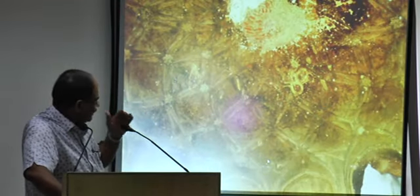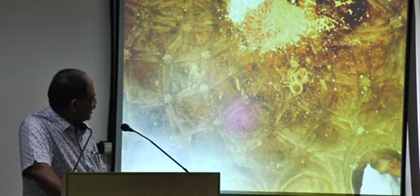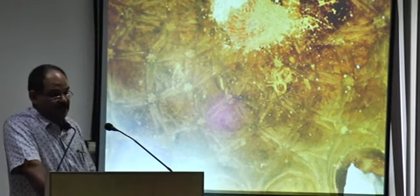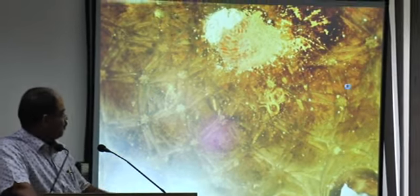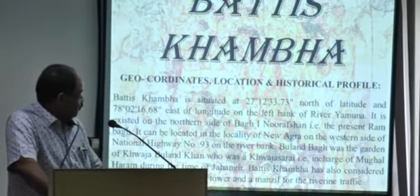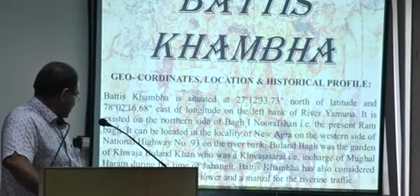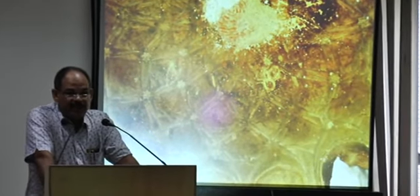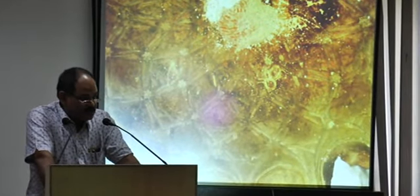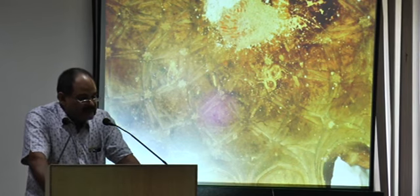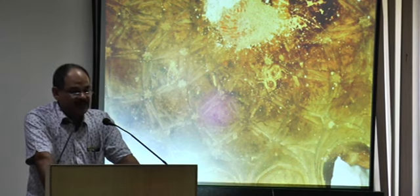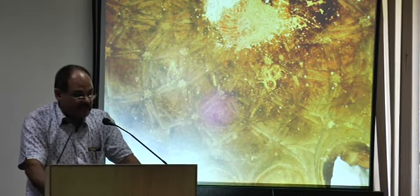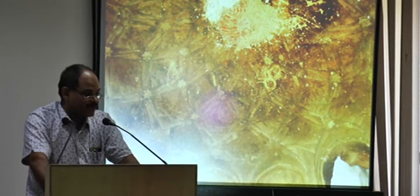Even after so much decay, the central dome is still having color — a star and something like that on the ceiling. This structure, locally known as Shahjahani Burj, is not having dropping eaves outside the structure except at two places where they have used the corbelling technique. The rest of the building is totally built in Indo-Islamic architecture.